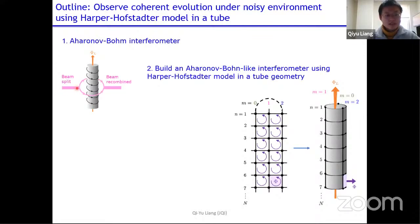Harper-Hofstadter Model is a 2D lattice model with a uniform magnetic field perpendicular to the lattice plane. And here I'm drawing a lattice with only three sites along the horizontal axis. And if you can couple the edge m-state 0 to 2 here, then you will make a tube that looks kind of similar to the Aharonov-Bohm interferometer. We managed to thread a longitudinal flux phi L here and study the dynamics on the tube in a similar fashion as this Aharonov-Bohm interferometer, where you split charge particles, let them go around the solenoid, and then recombine them.